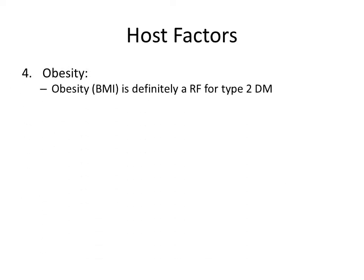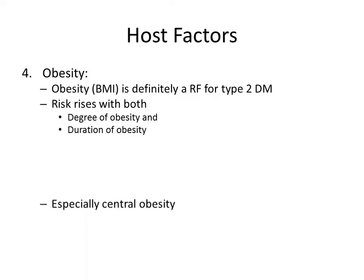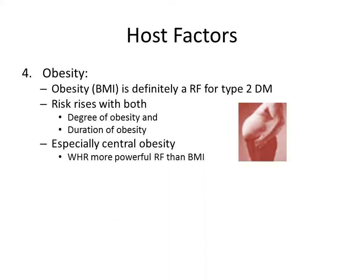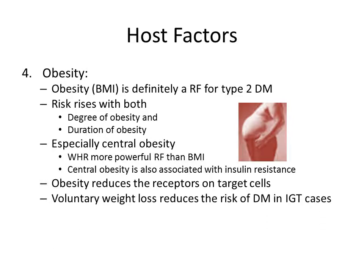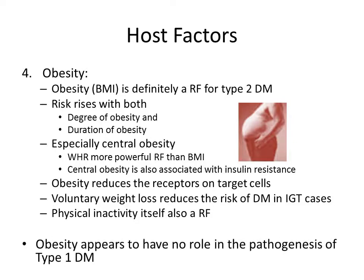Obesity is definitely a risk factor for type 2 diabetes mellitus, as defined by a high BMI. The risk rises with both the degree and duration of obesity, especially central obesity — a high waist-hip ratio — which is a more powerful risk factor than BMI alone and has also been linked to insulin resistance. Obesity reduces insulin receptors on target cells, and voluntary weight loss has been shown to reduce the risk of diabetes in pre-diabetics. Physical inactivity itself is also a risk factor, apart from contributing to obesity. Obesity appears to have no role in the pathogenesis of type 1.